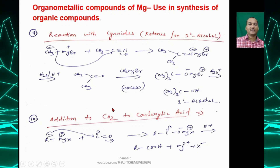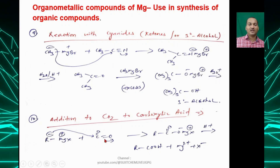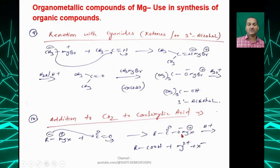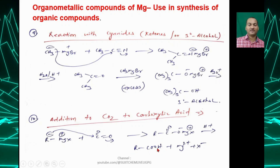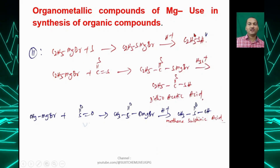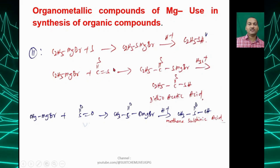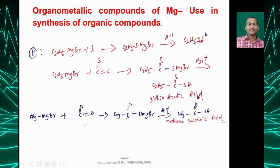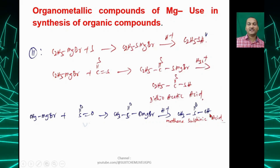Grignard reagent also reacts with carbon dioxide: R⁻ attacks the carbonyl carbon, the double bond breaks on oxygen giving RCO₂⁻MgX⁺, and upon hydrolysis you get a carboxylic acid. The Grignard reagent can also react with sulfur to give a thiol, and with sulfur dioxide to give methanesulfenic acid.